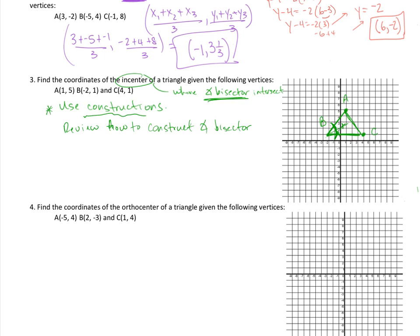If you do constructions for both angles, you'll see they intersect at the point (1, 2.5). You can do it for any two of the three angles — it doesn't matter which pair. Once you construct the angle bisectors, they intersect at (1, 2.5), which is the incenter coordinate.